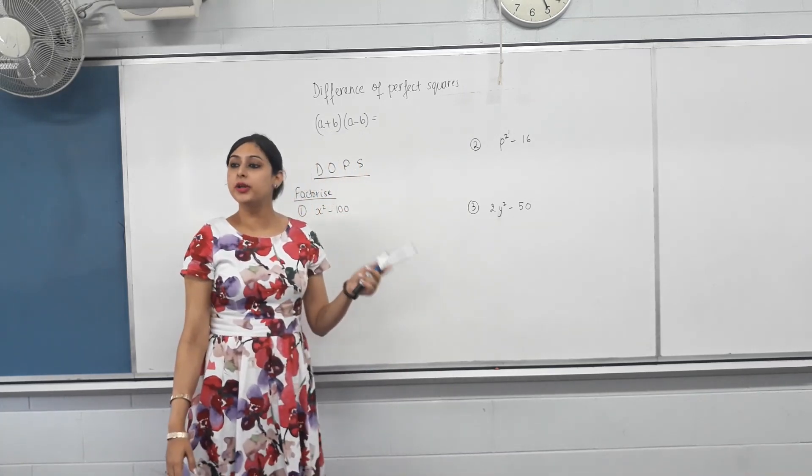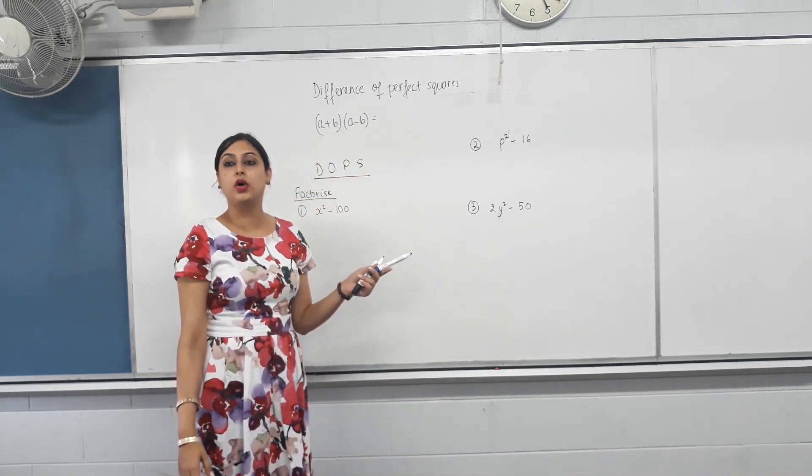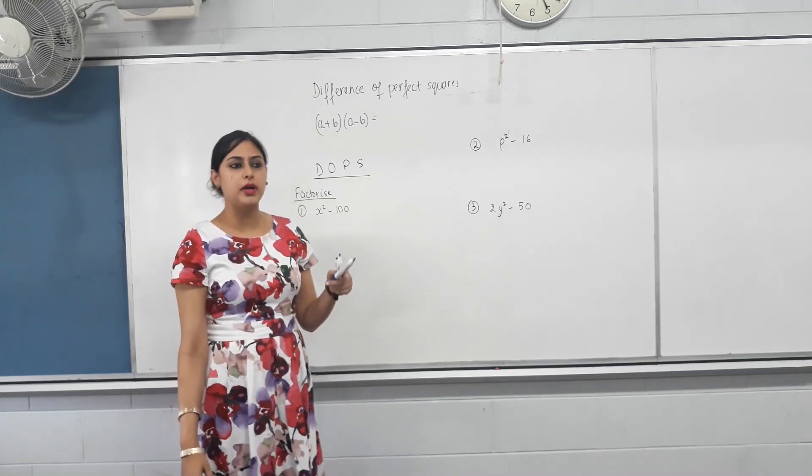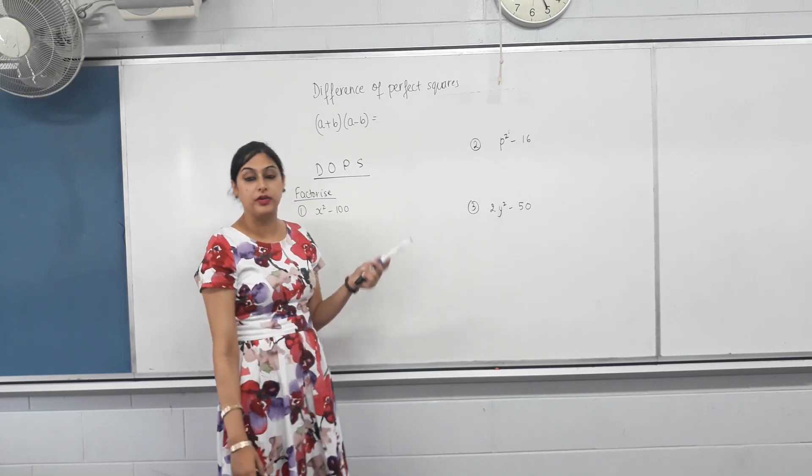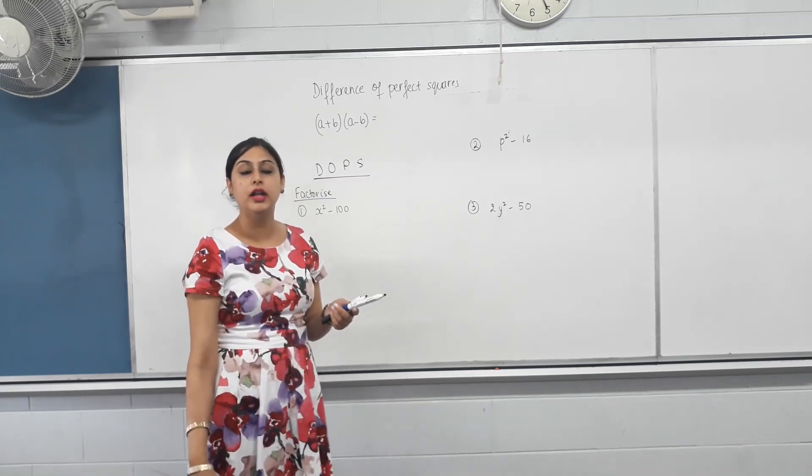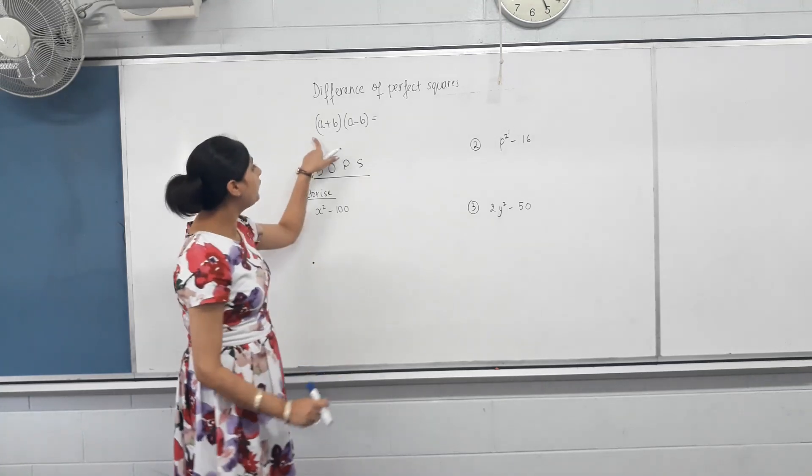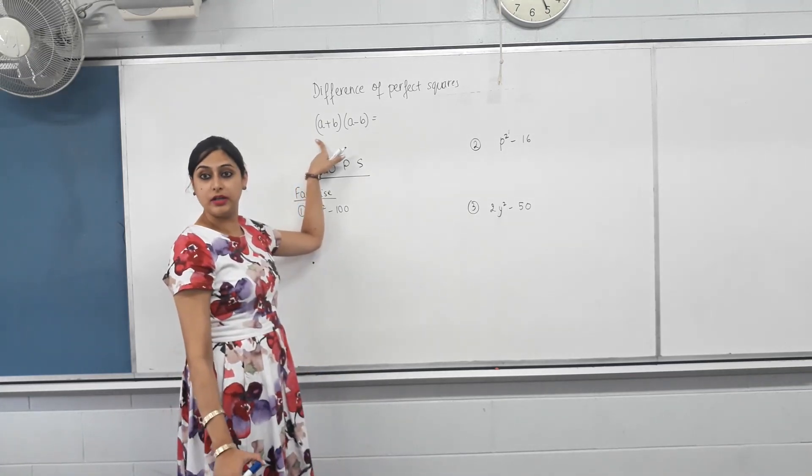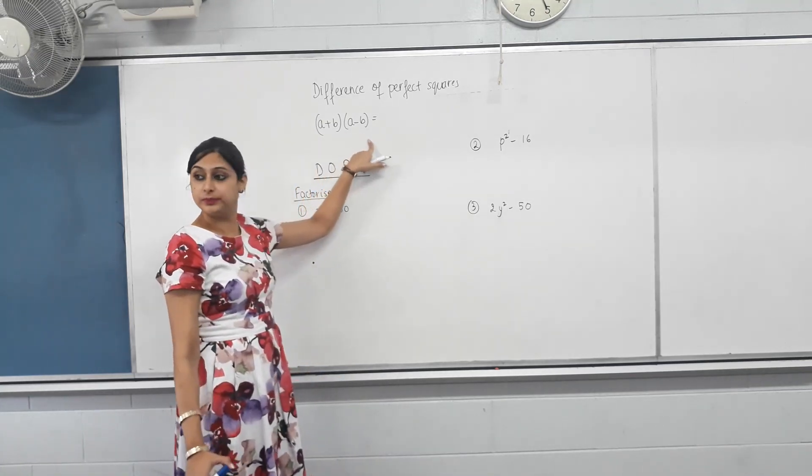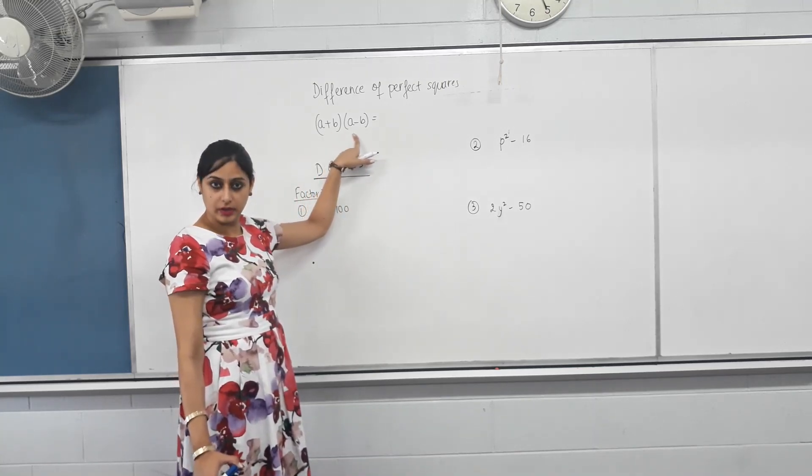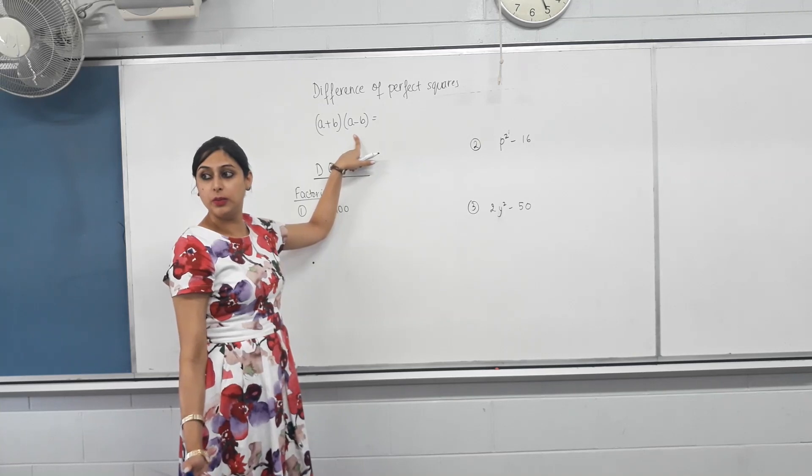Now, there's a different approach to these because they're all dots. Again, the book calls it dots, difference of two squares. I'm going to call it dots because I just prefer it. It sounds nicer in my brain. Difference of perfect squares. Actually, let's see what that means. If we have two numbers in a bracket or two letters, A and B, one bracket has a plus sign, one has a minus sign. Okay, let's see what happens when we expand it.